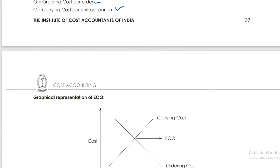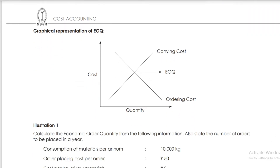In the EOQ graph, as purchase quantity increases, carrying cost increases. As purchase quantity decreases, ordering cost increases. The point where ordering cost and carrying cost intersect is the break-even point — that is the Economic Order Quantity, where total cost is minimized.